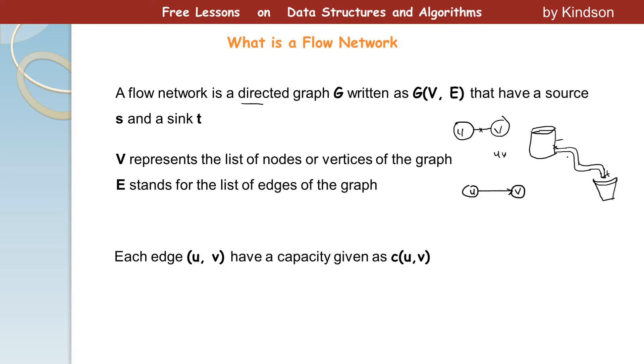So this pipe, this pipe has a capacity which is represented as c. If this is u and this is v, then the capacity of this pipe, the amount of water this pipe can carry, is represented as c(u, v). So that is basically what it means, the amount of water.